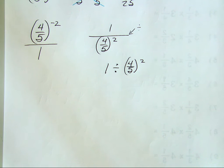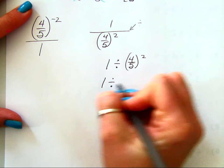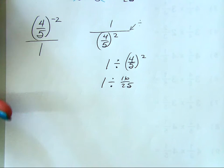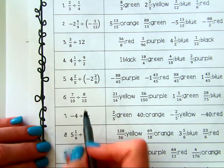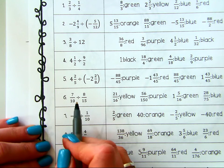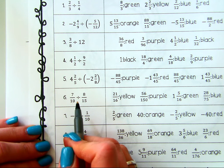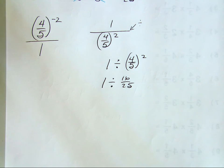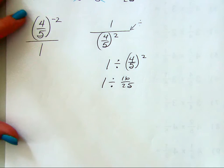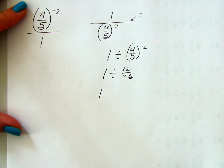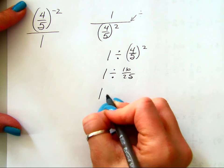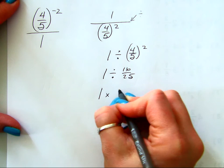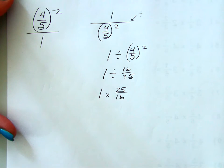And what is 4 fifths squared? We already determined it was 16 over 25. We're dividing fractions, but you multiply by the reciprocal — you do not say keep, change, flip. So I'm going to take that 1 and multiply by 25 over 16.